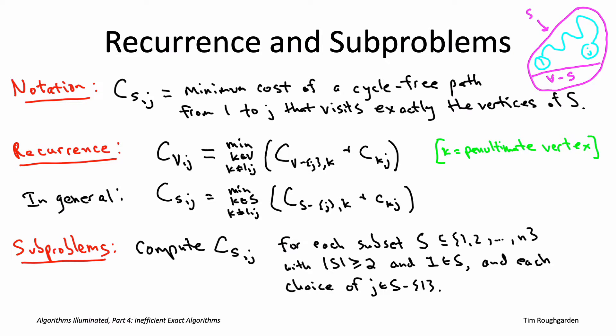I also want to point out that while exponential, it's a lot better than n factorial. It's more like two to the n than n factorial. And the reason why, where that savings is coming from is that these subproblems don't worry about the order in which the vertices of capital S are visited. So it tracks which subset of vertices a path has visited, but not the order in which they were visited. And that's why the factorial goes away and is replaced by the simple exponential function two to the n.